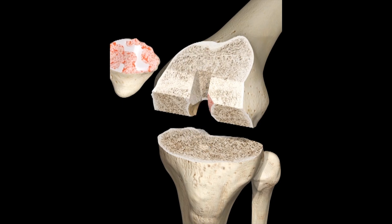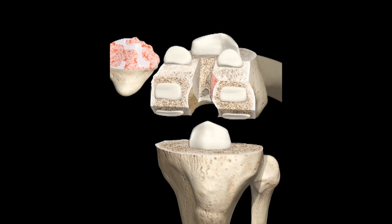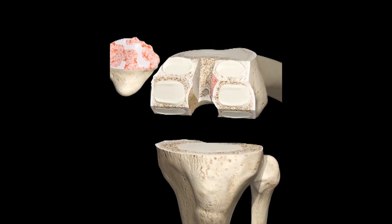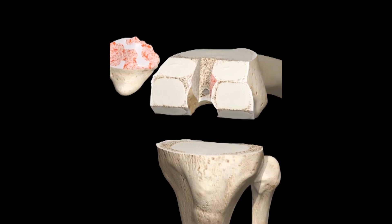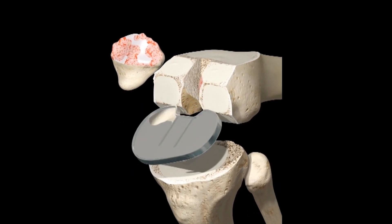Holes are drilled into the bones to allow for placement of metal components. Replacement metal articular plates are then fixed to the bones using polymethyl methacrylate cement.